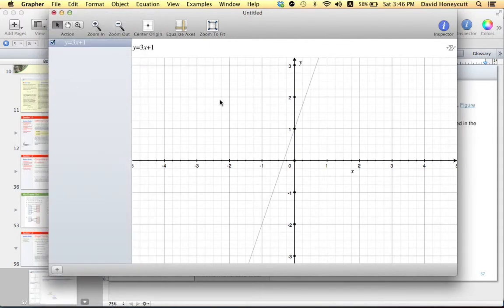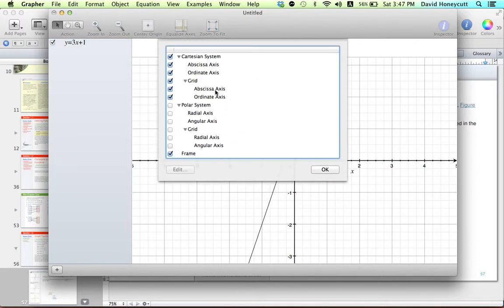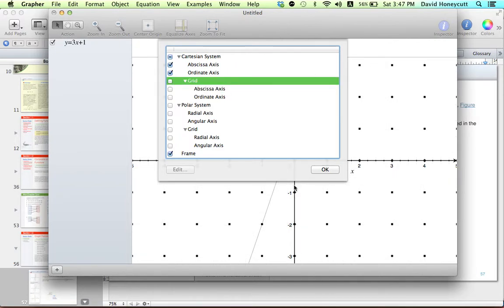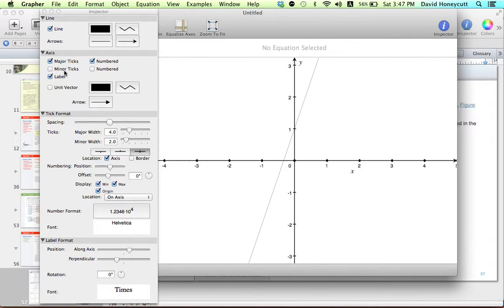I guess you don't change the background there, so we're going to go to format again, axis and grids. You're going to uncheck grid, that'll get rid of the grid in the background, so you have a nice white background. Click on the x-axis just to get rid of those minor ticks, you can keep the labeling, I would move over x to the end.